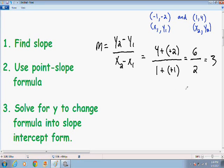So now that we have found our slope, we can move on to step number 2. And we want to use our point-slope formula. And our point-slope formula is y minus y1 is equal to m times x minus x1.